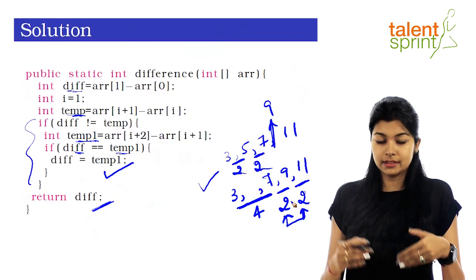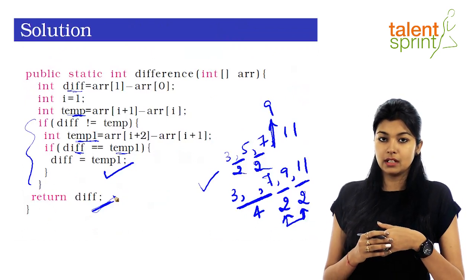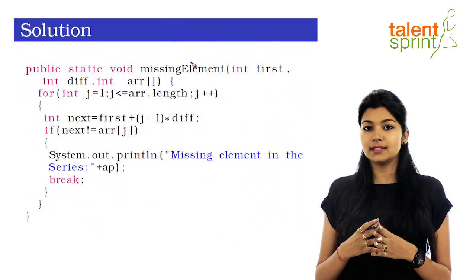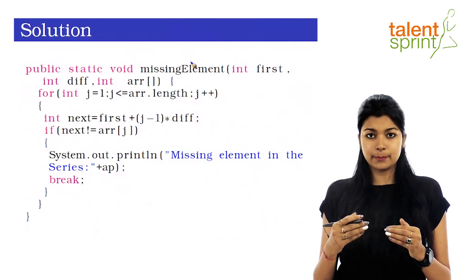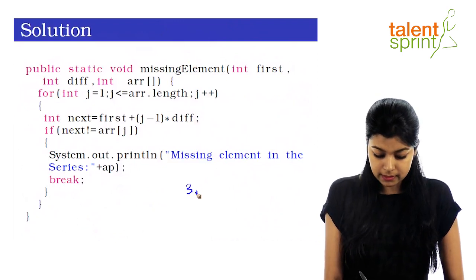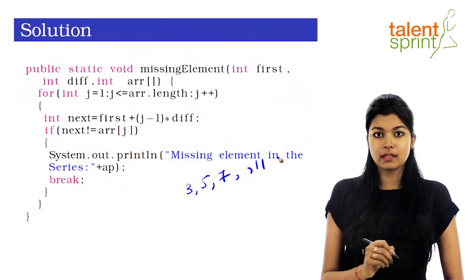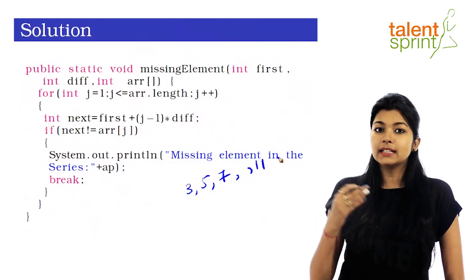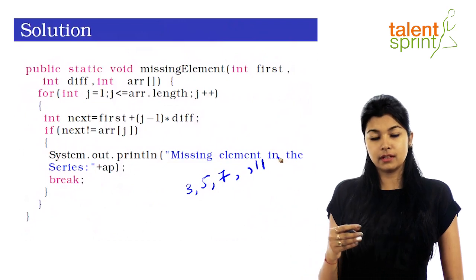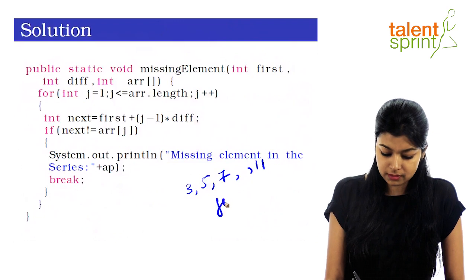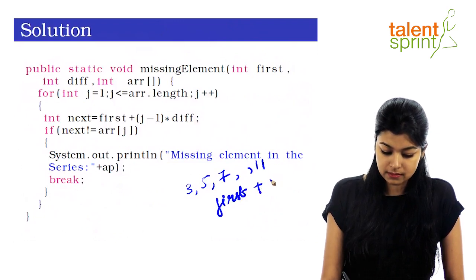Now moving on to finding the missing element. Taking the example again: 3, 5, 7, and 11. To calculate any element of the arithmetic progression, the simple formula is: first element plus (difference × position index).